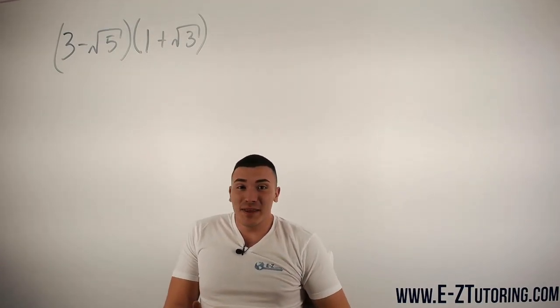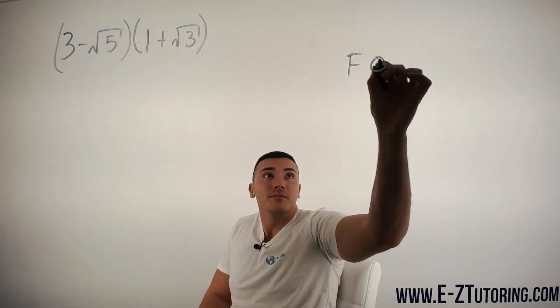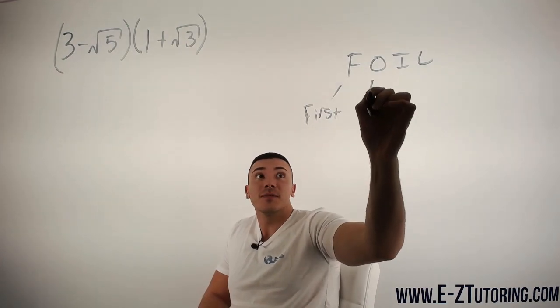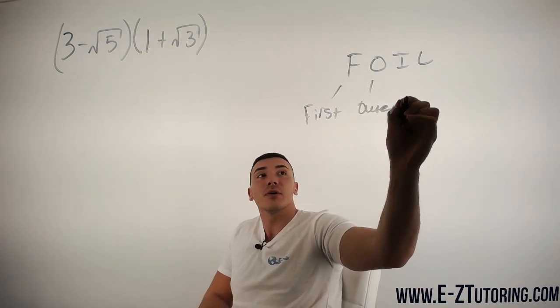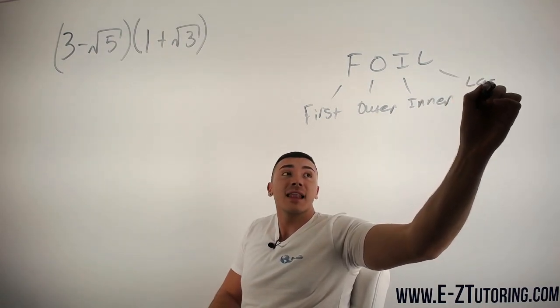In order to do this you will follow the basic methods of FOILing. I'll go ahead and write it out. For FOIL we want to multiply the first terms, then the outer terms, then the inner terms, and then the last terms.